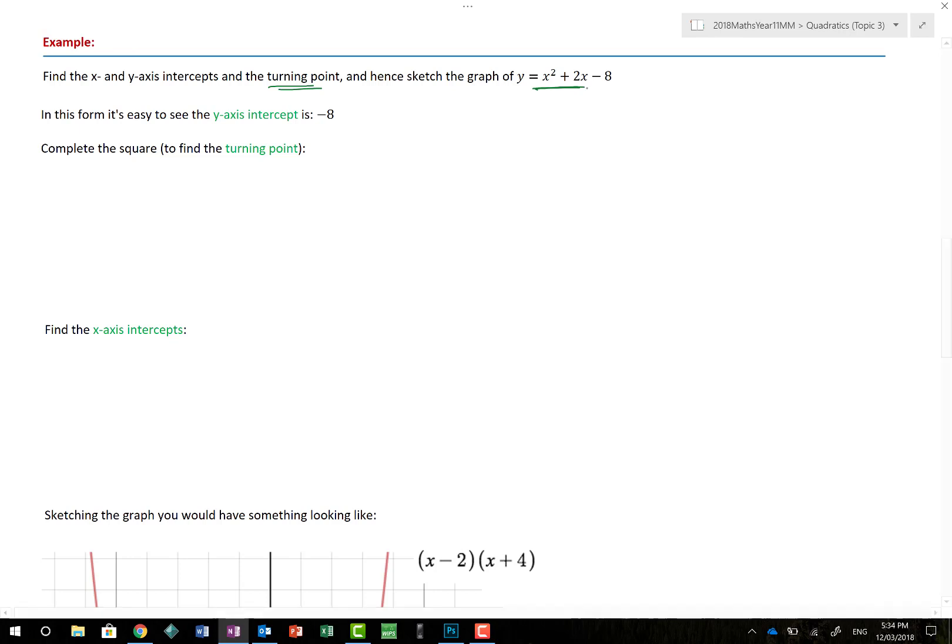Number 1. In this form, it's really easy to see the Y axis intercept. We could use our standard rules and say X equals 0, which would then give Y is equal to 0 squared plus 2 lots of 0 minus 8. And we know that 0 and that 0. But with practice, you tend to know that this last value here is the Y axis intercept when it's written in that form. There's my minus 8.